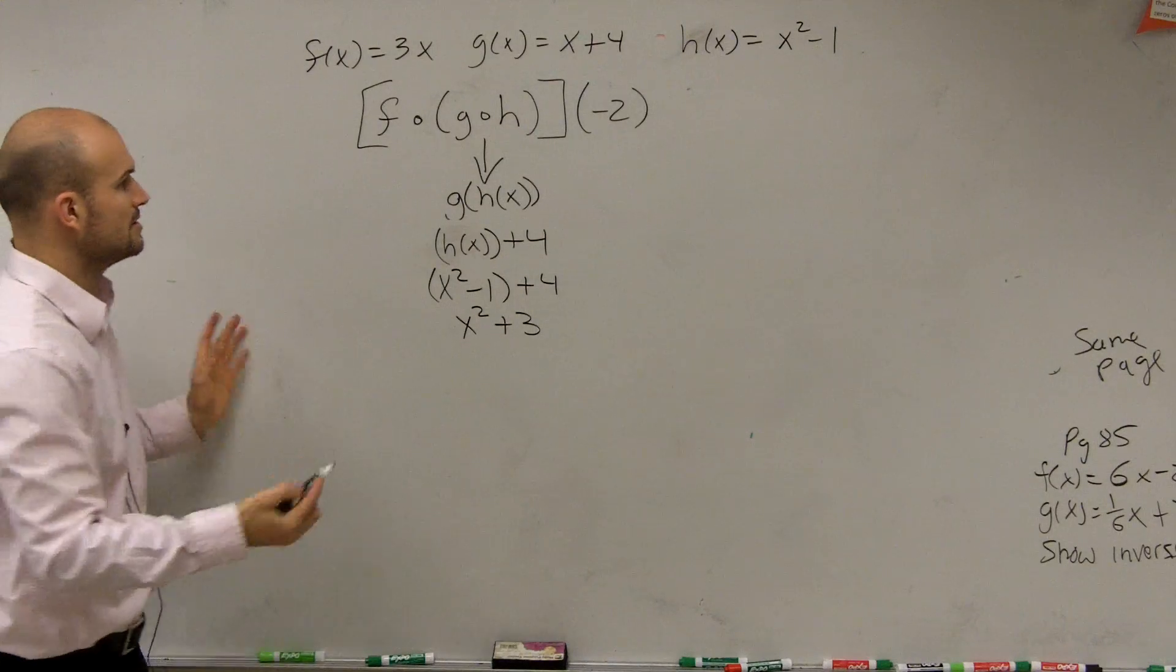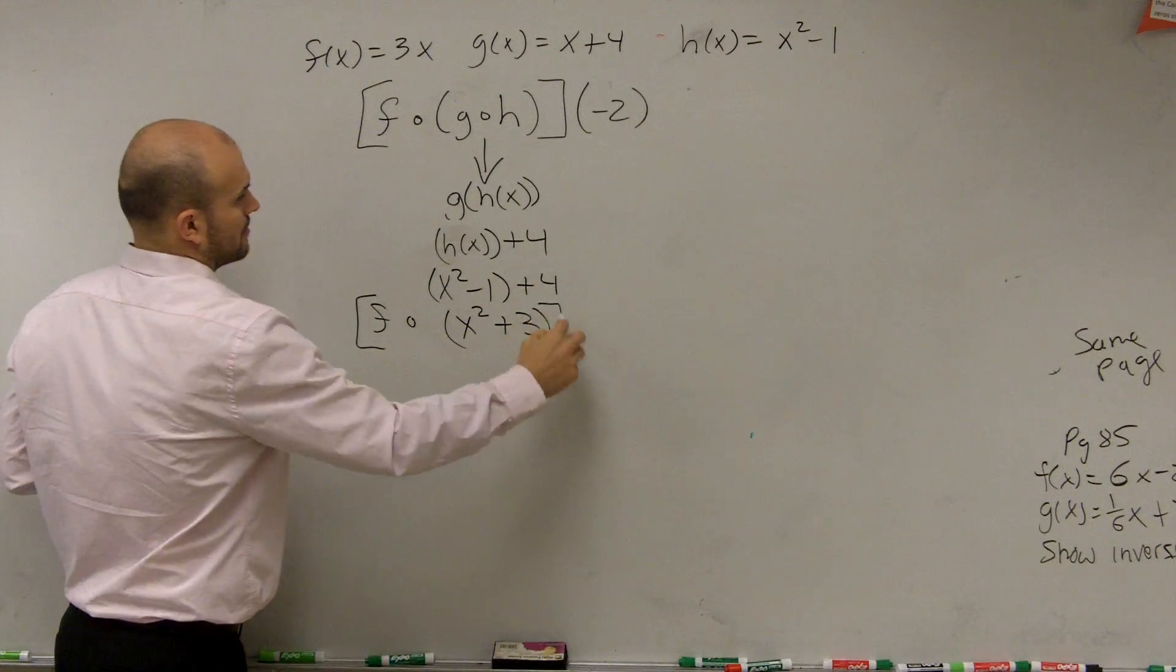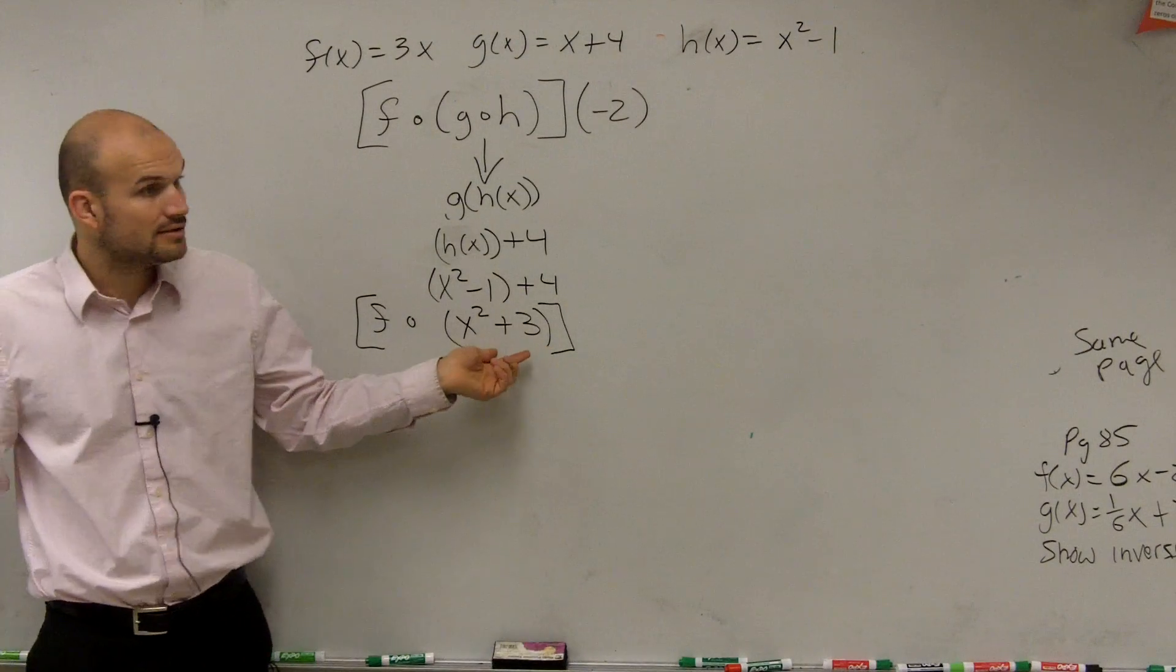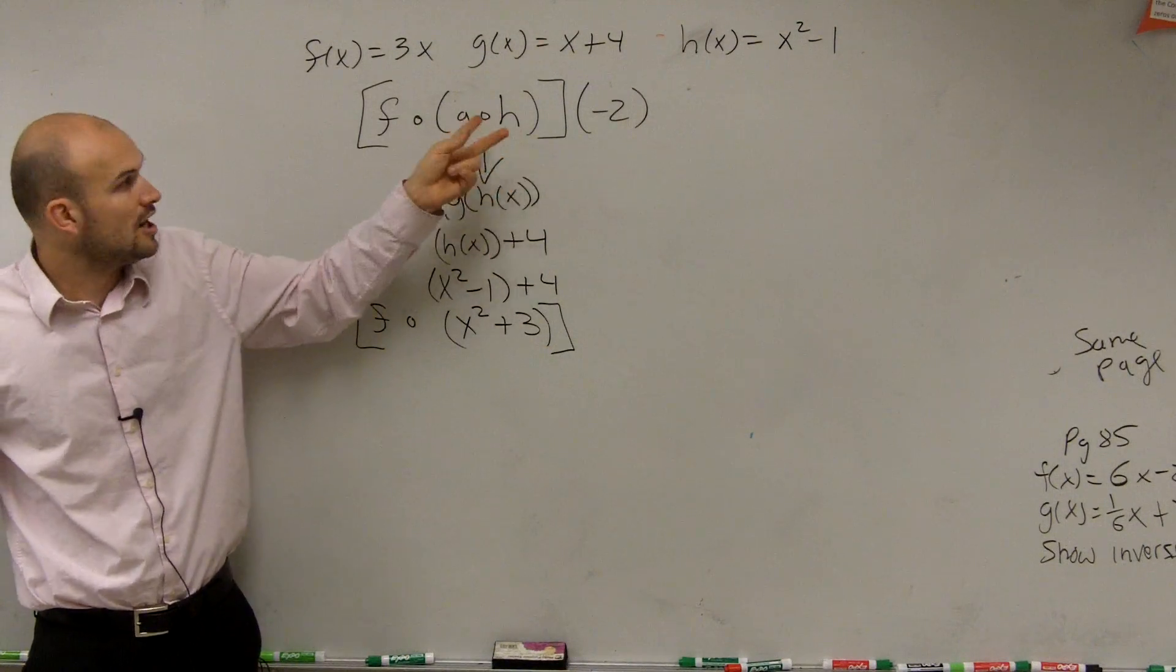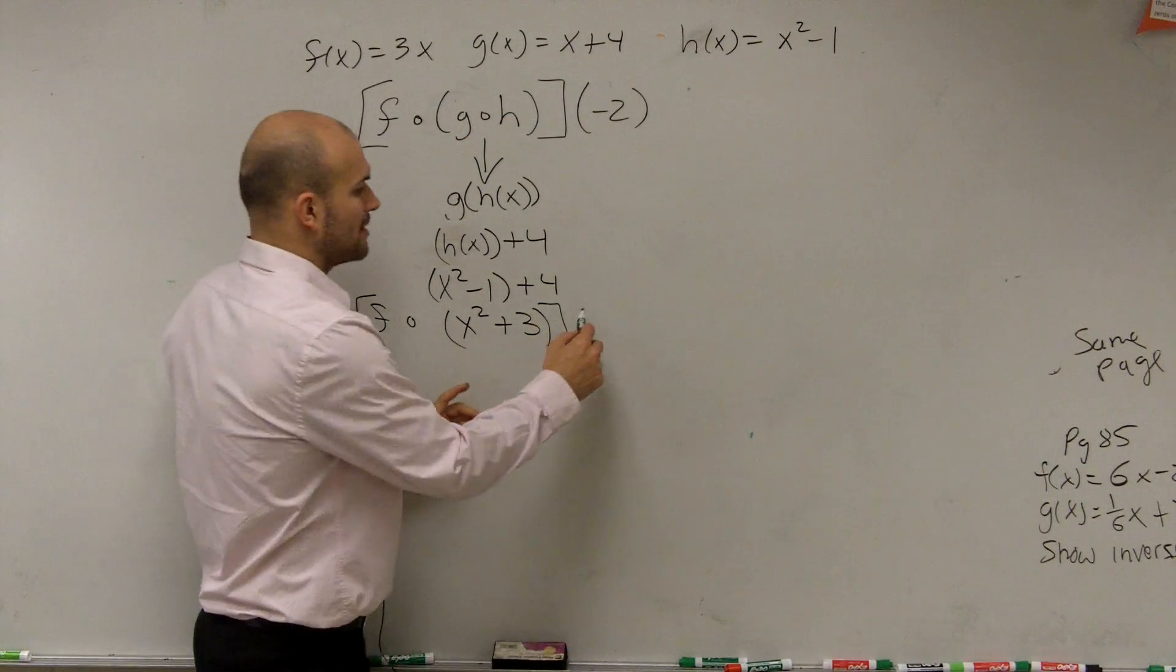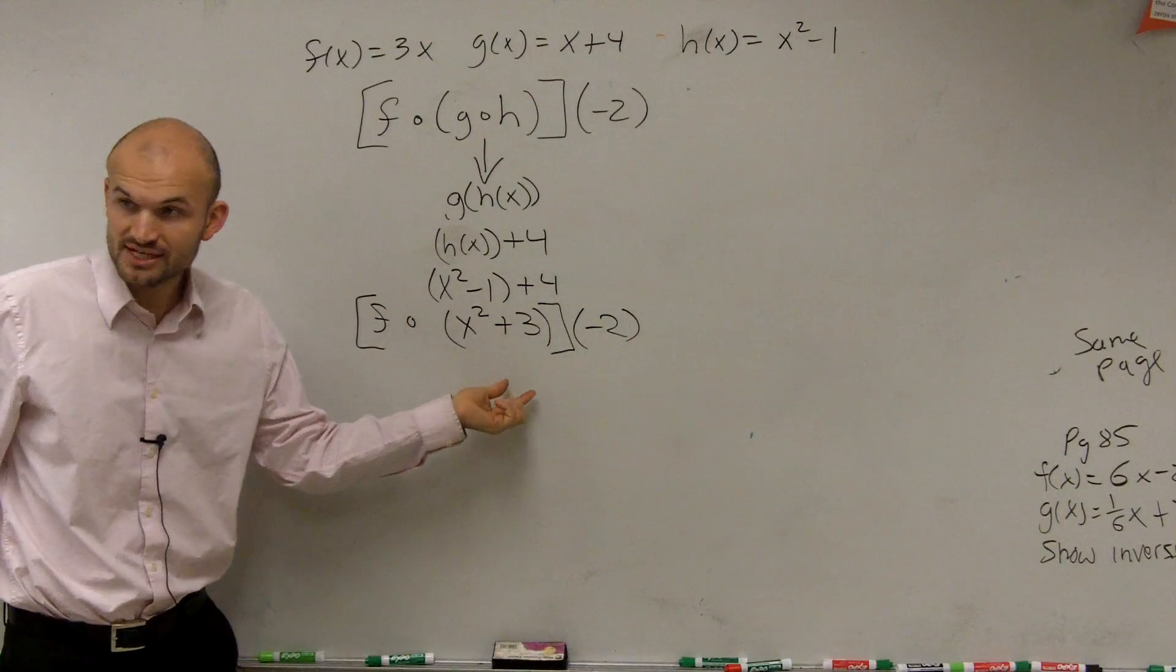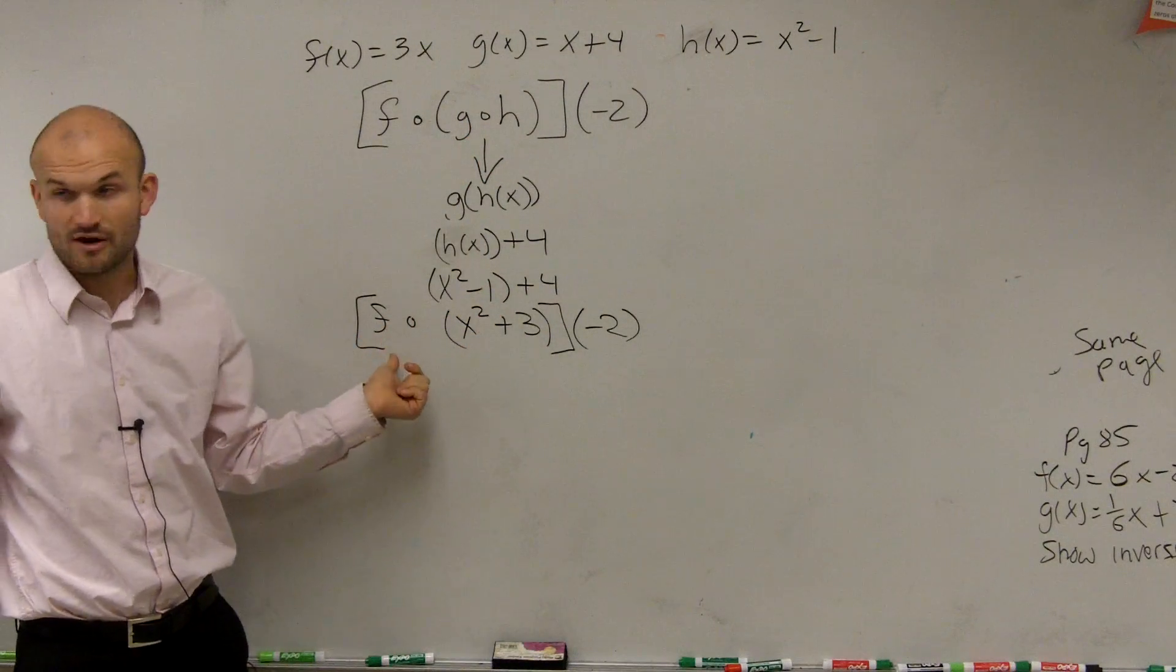Alright, so now I have f of my new function, which is x squared plus 3, which represents the g of h, right? But g of h is equal to x squared plus 3. So now what I'm going to do is plug this function, which is g of h, into my f function.